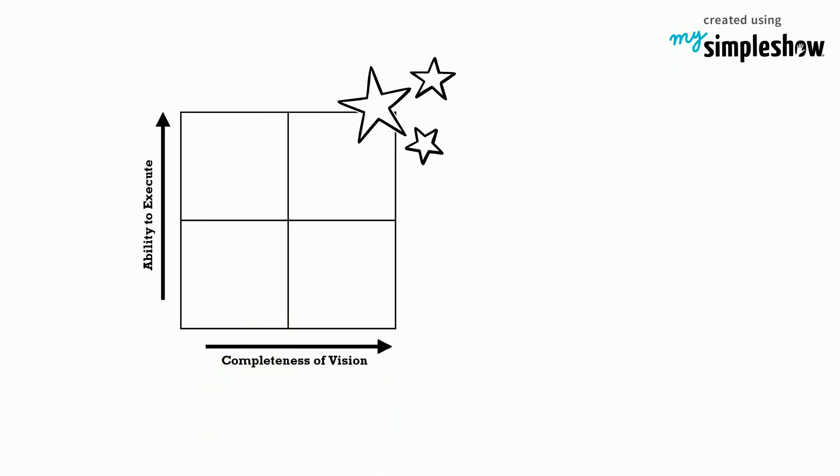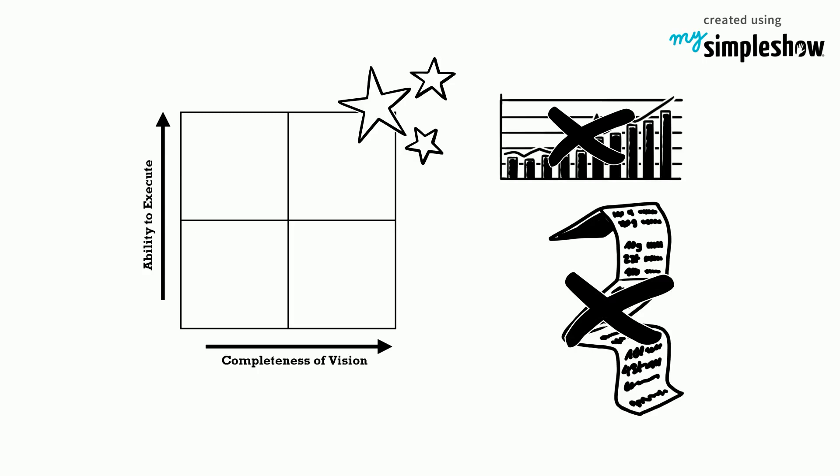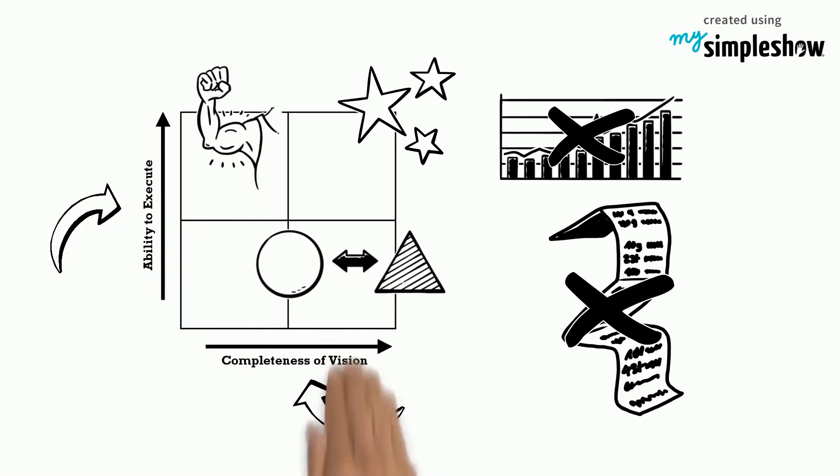Magic quadrants are not merely about statistics or lists that rank companies. A magic quadrant makes use of a two-dimensional matrix to illustrate the strengths and differences between companies.